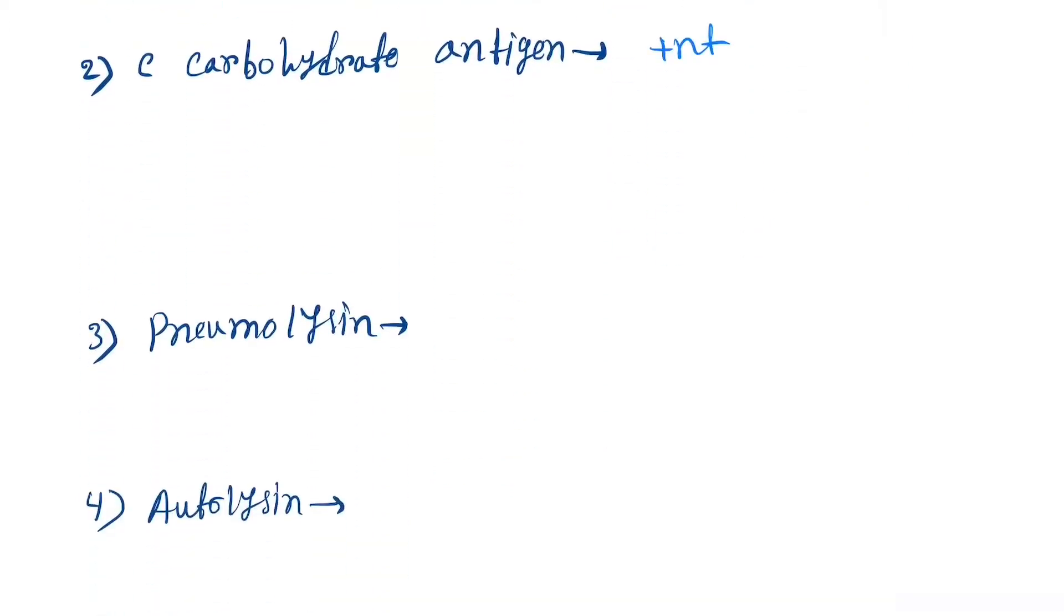Next is pneumolysin. This inhibits neutrophil chemotaxis and phagocytosis.